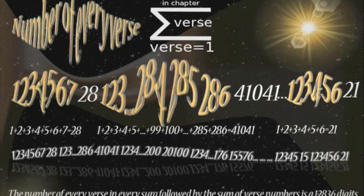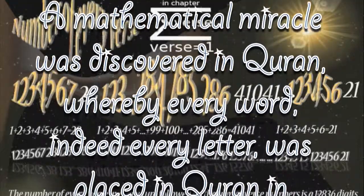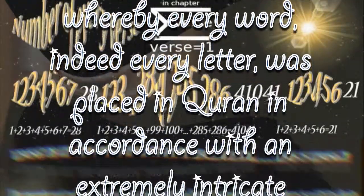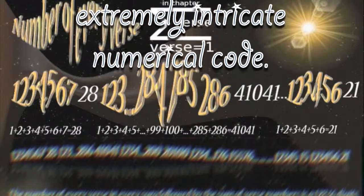A mathematical miracle was discovered in Quran, whereby every word, indeed every letter, was placed in Quran in accordance with an extremely intricate numerical code. The code is based on the number 19,